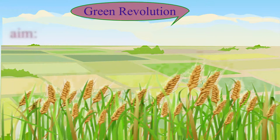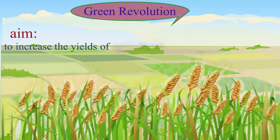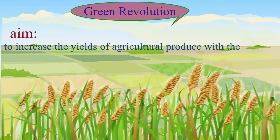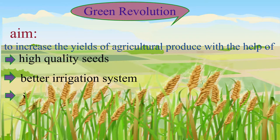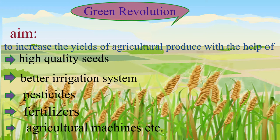Green Revolution aimed to increase the yields of agricultural produce with the help of high quality seeds, better irrigation system, pesticides, fertilizers, and agricultural machines, etc.